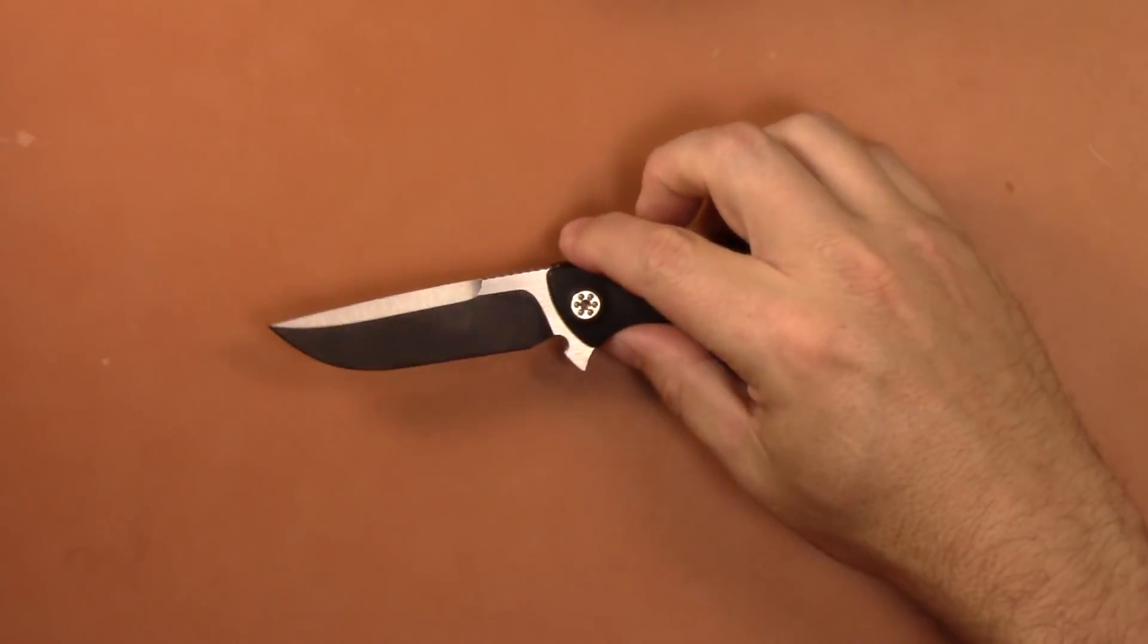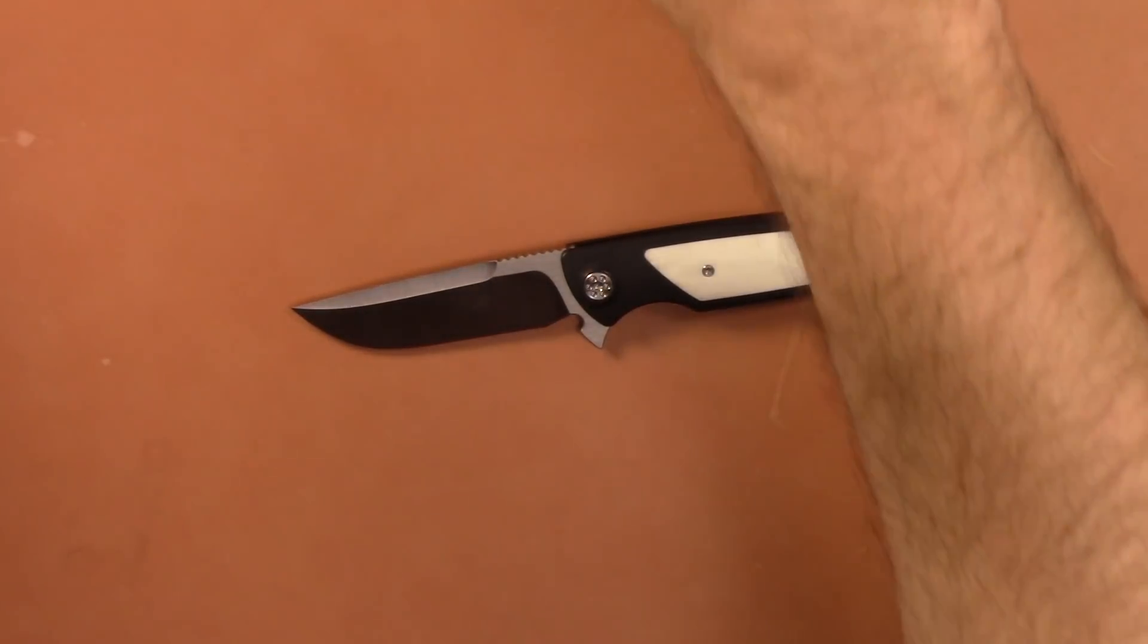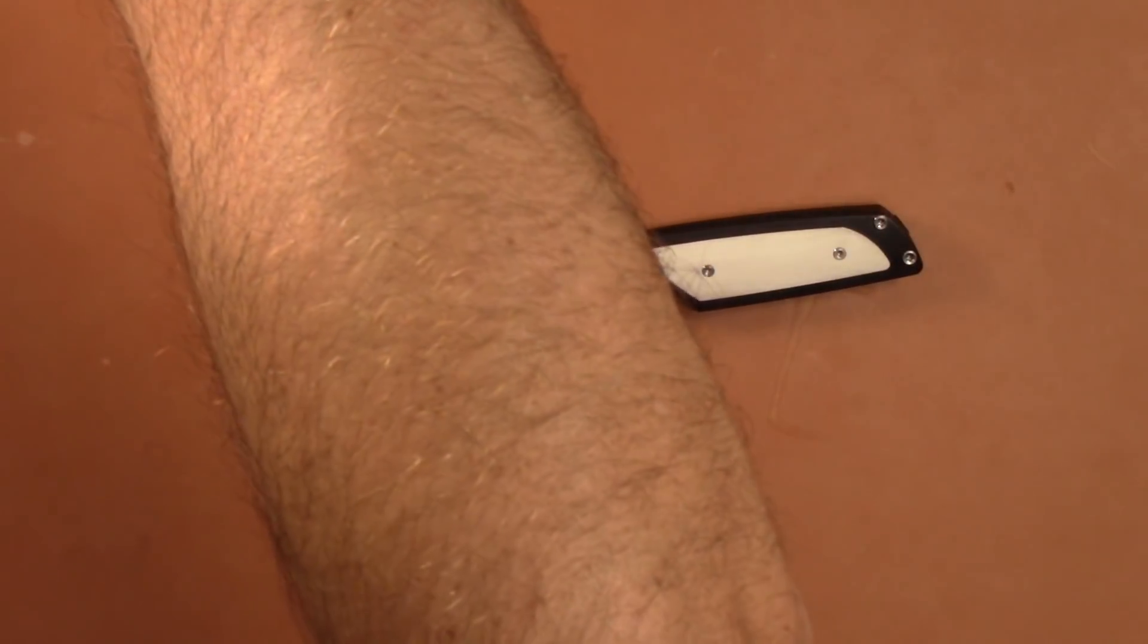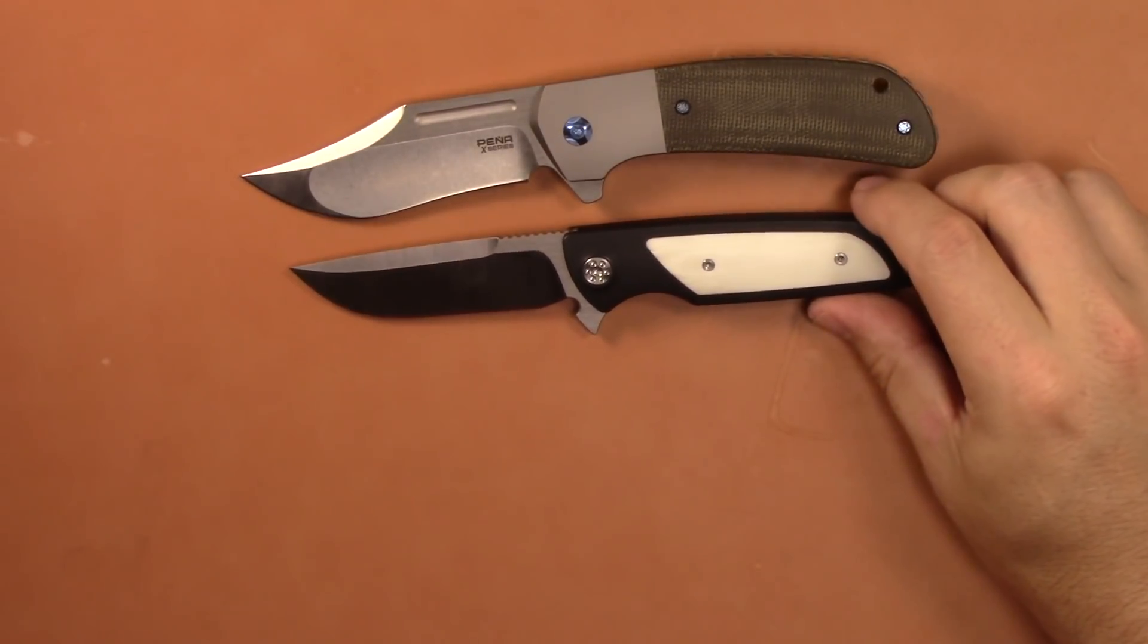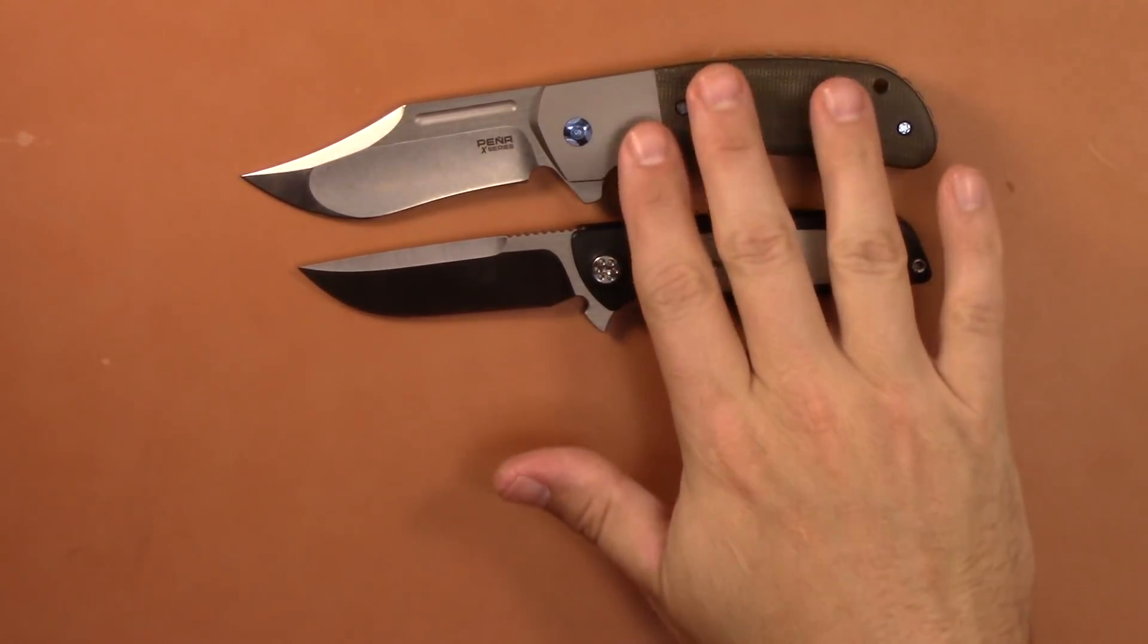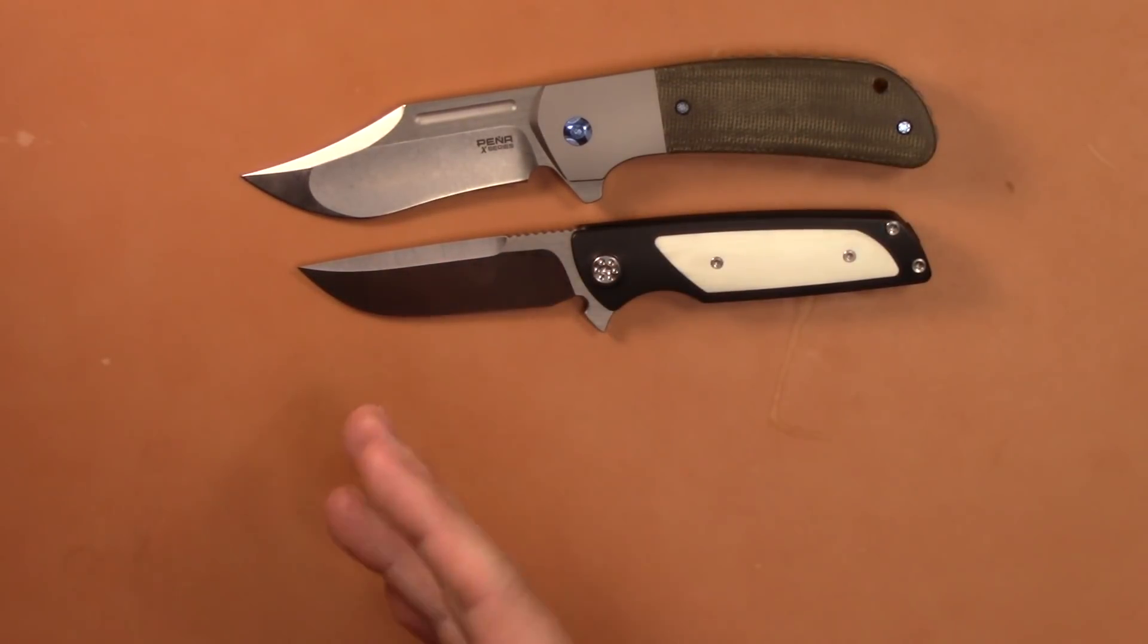The cost on these guys, the M390 version was $350 and the Damascus steel was $550. That's about right in line with a lot of makers using Riot Knives, like the Pina X series here that I've got. We'll just do a comparison in size there. That one's $365, so a little bit bigger knife, but this one does have better materials. I think the price is really good actually.